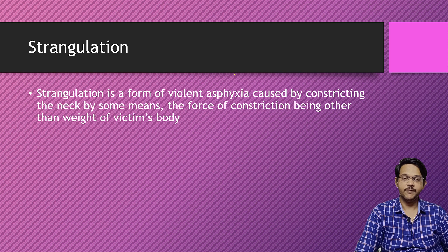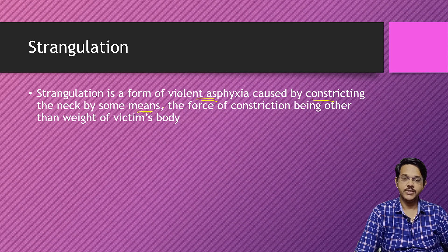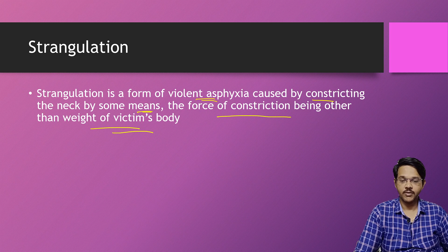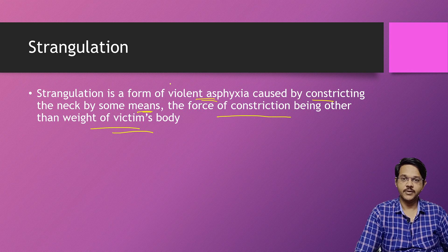By definition, strangulation is a form of violent asphyxial death caused by constricting the neck by some means. The neck is compressed by any means, but the force of constricting is other than the weight of the victim's body. If the victim's body weight becomes the constricting force then it becomes hanging, but if any other means is used to compress the neck, it becomes strangulation.